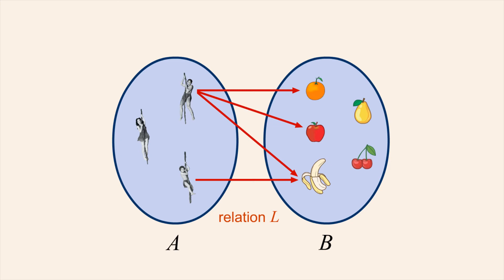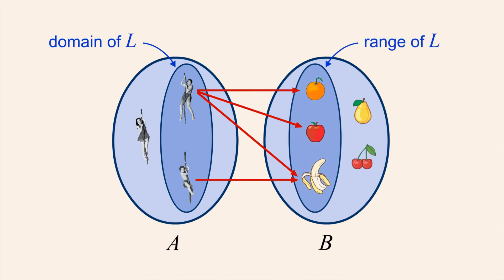The set of all elements of A which are L related to elements of B is called the domain of L. Likewise, the set of all elements of B to which the elements of A are related is called the range of L.